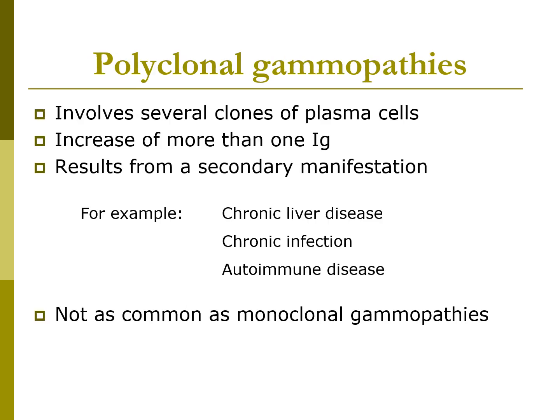Polyclonal gammopathies involve several clones of plasma cells. There is an increase of more than one immunoglobulin, resulting from a secondary manifestation of conditions such as chronic liver disease like hepatitis B, chronic infections, or autoimmune diseases like rheumatoid arthritis. The polyclonal gammopathies are not as common as the monoclonal gammopathies.